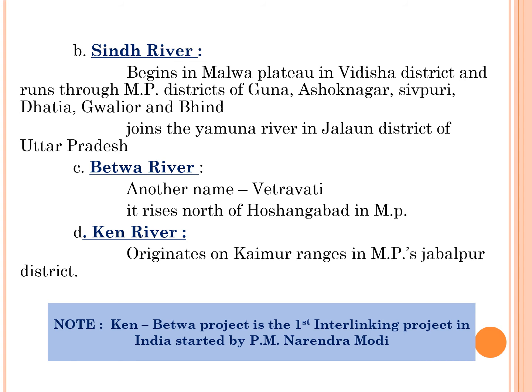Betwa river, also known as Vetravati, rises north of Hoshangabad in Madhya Pradesh state in the Vindhya Range. The fourth tributary of Yamuna river is Ken river, which originates on the Kaimur Range in Jabalpur district of Madhya Pradesh state. Ken-Betwa project is the first interlinking project in India, started by Prime Minister Narendra Modi.